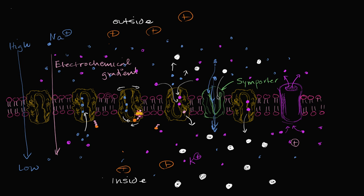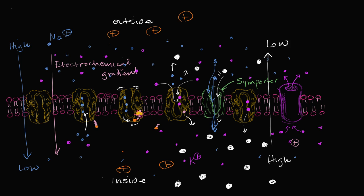The sodium and glucose go together through the symporter. The glucose is being transported against its concentration gradient — high concentration outside, low concentration inside — and the cell wants to get as much glucose in as possible. To transport something against its concentration gradient requires active transport. Here, the source of energy to go against glucose's concentration gradient is the stored potential energy from the electrochemical gradient of sodium. This type of active transport — using energy stored through another form of active transport, the sodium-potassium pump — we call secondary active transport.